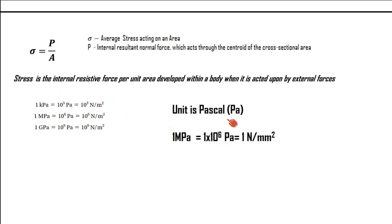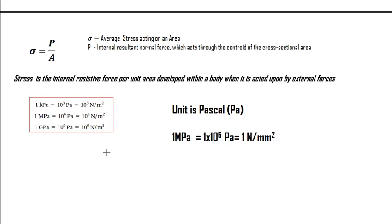The unit of stress is Pascal, which is Newton per meter squared — one Pascal is one Newton per meter squared. Stress can be expressed in kilopascals, megapascals, or gigapascals. One important correlation to keep in mind is that one megapascal is one times ten to the power six Pascal, which is the same as one Newton per millimeter squared.